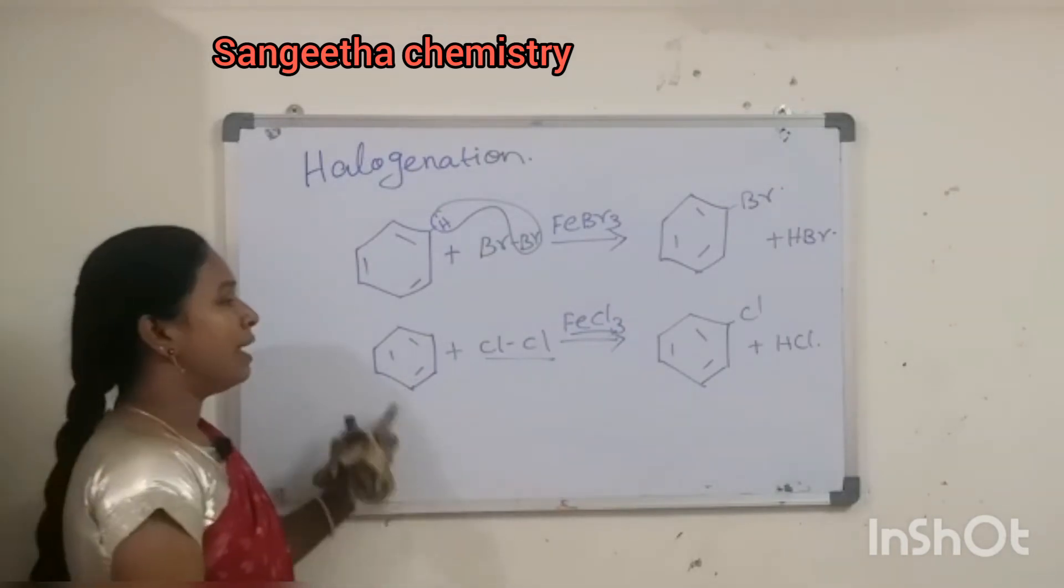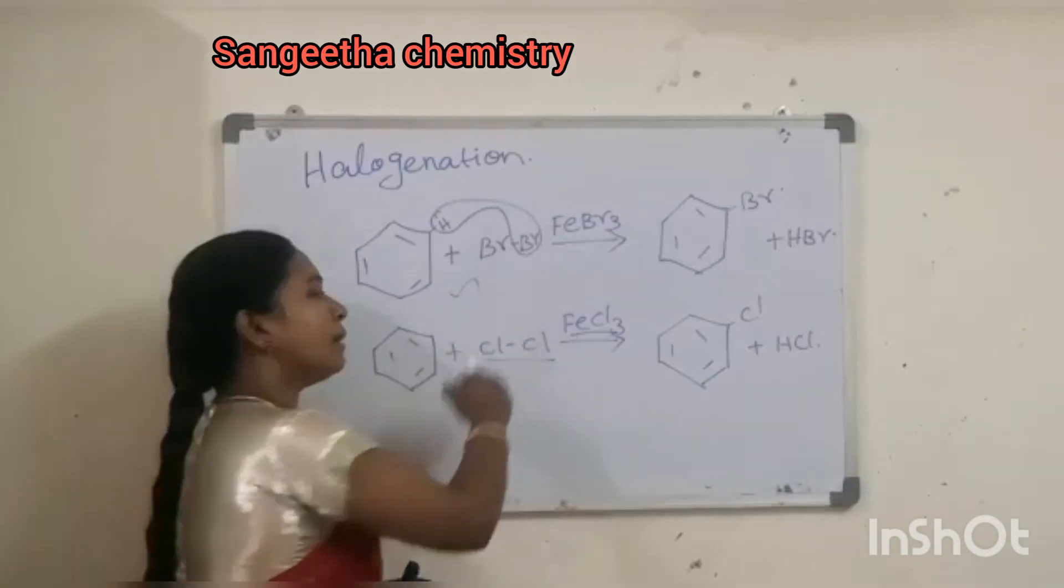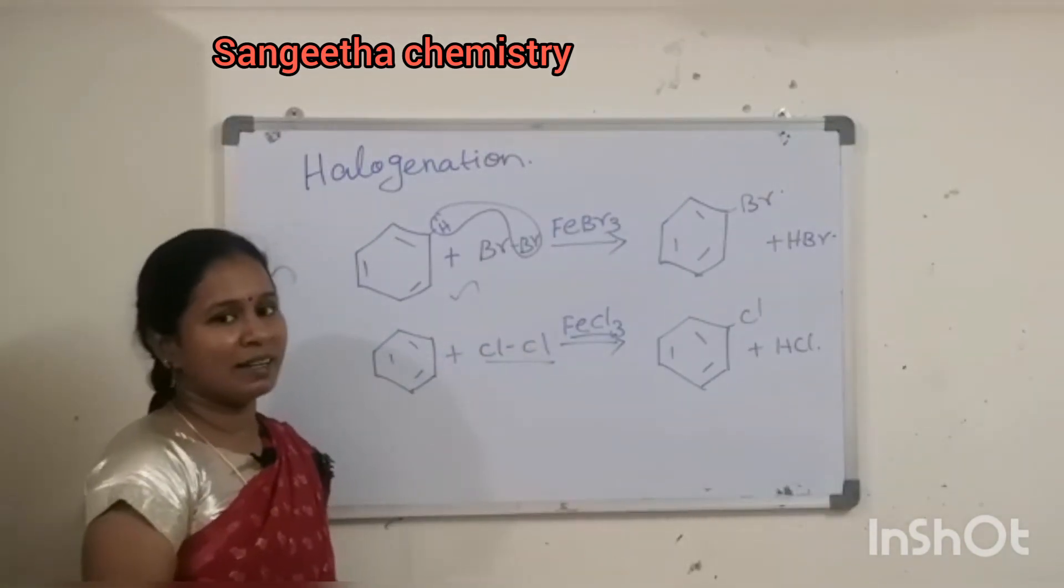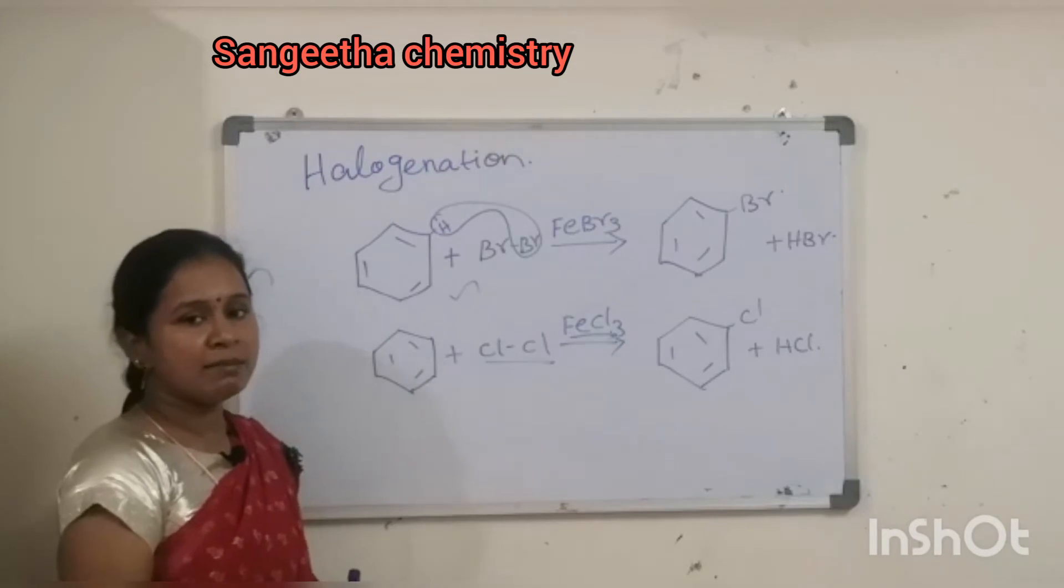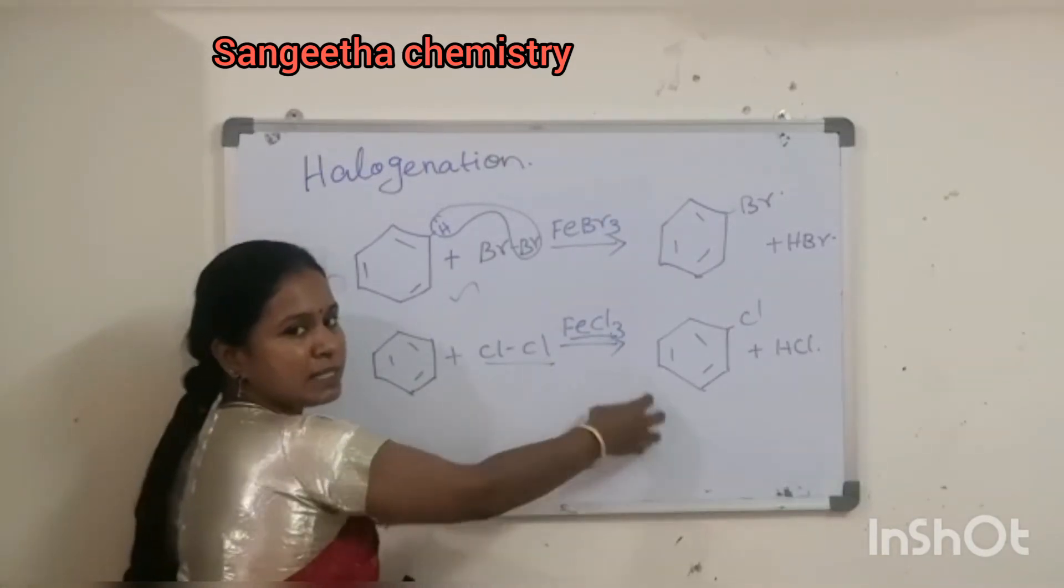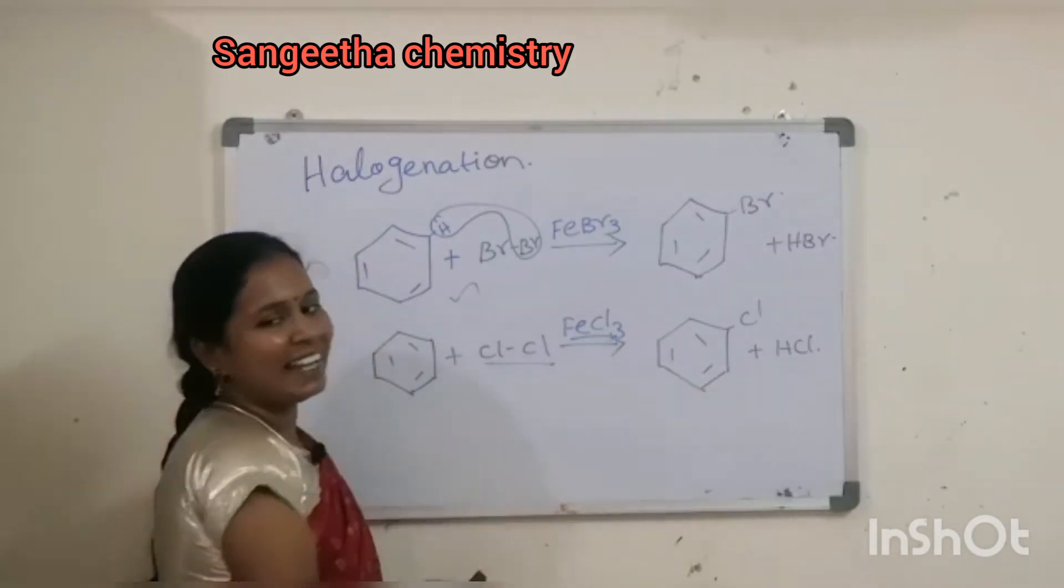This is Bromobenzene mechanism. Chlorobenzene, let me go into the mechanism. So benzene is going to react with halogen in the presence of a Lewis acid. We are getting what? Chlorobenzene and HCl.